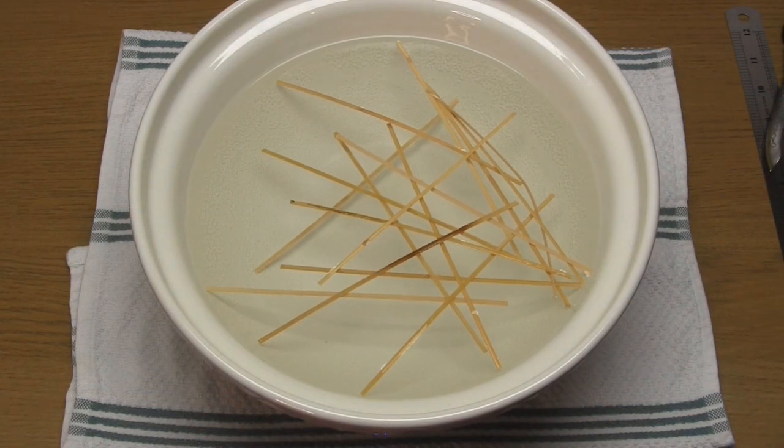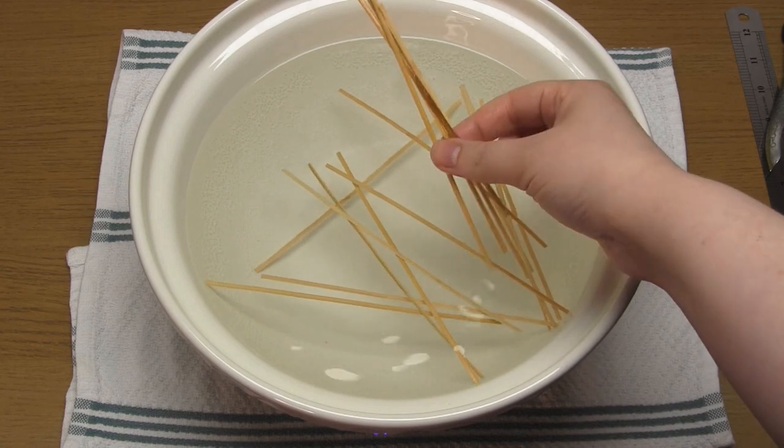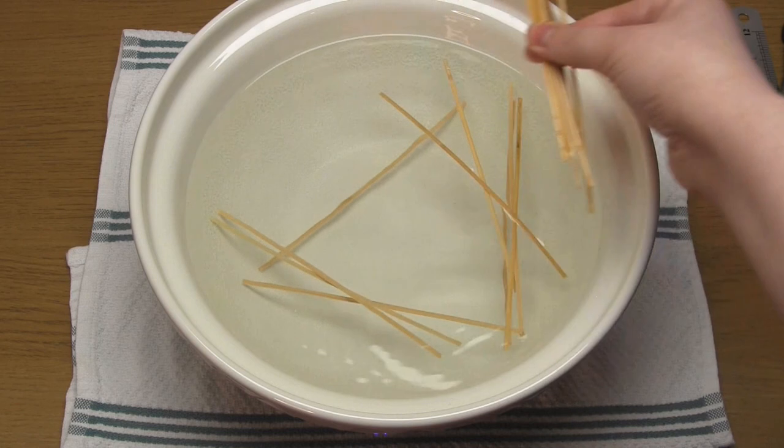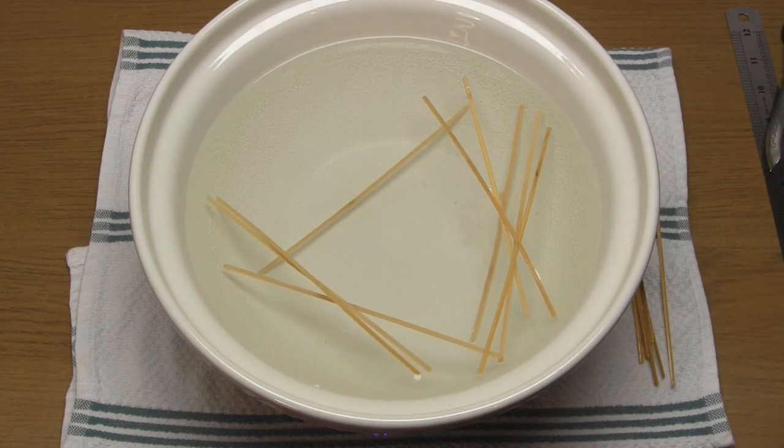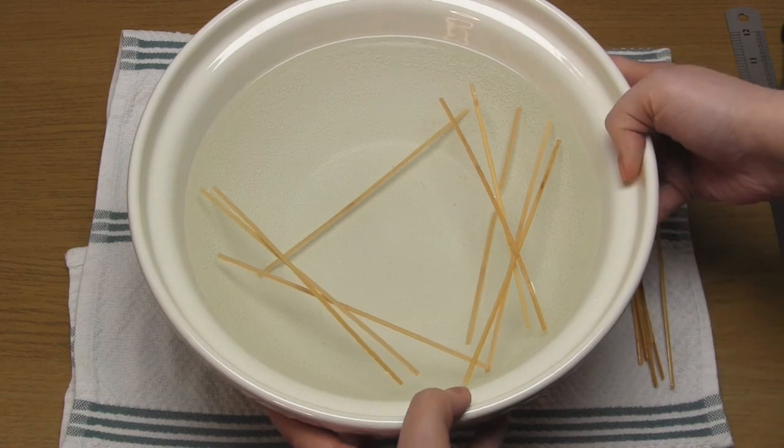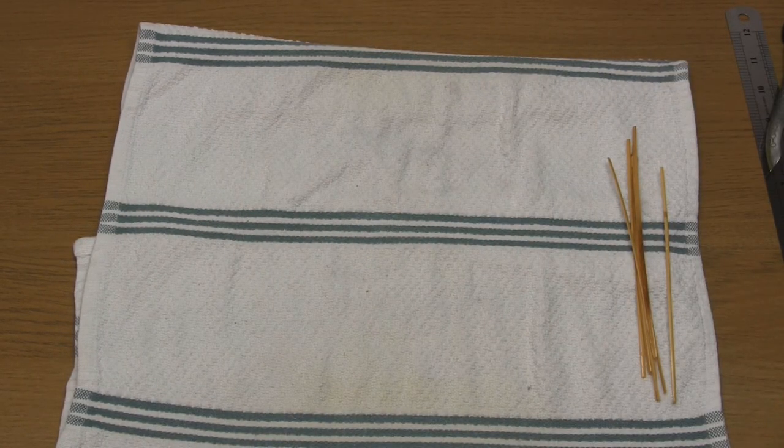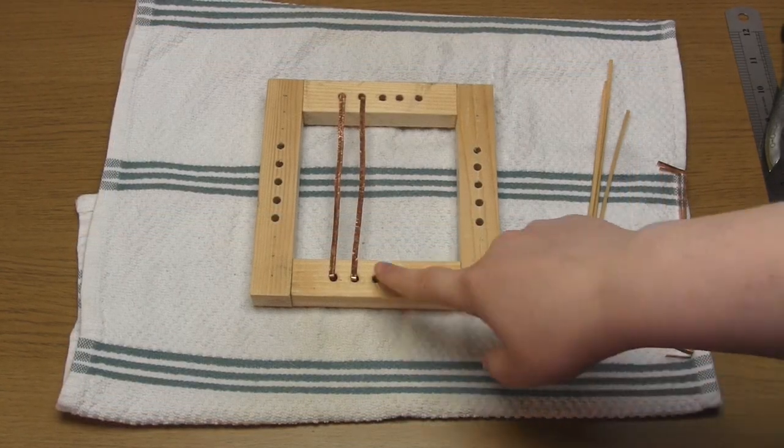You then need to prepare your cane pieces and to do this just cut the cane into the same lengths as the copper pieces. So in my case that was about six inches. Once you've cut them just add them to a big bowl of water and leave them to soak for about 20 minutes. This will make the cane flexible rather than brittle. In total for this project I needed 16 pieces of cane.